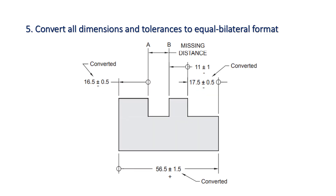Convert all dimensions and tolerances to equal bilateral format. Here, the 17 is converted to 16.5 ± 0.5 as its equal bilateral equivalent. The 47 is converted to 56.5 ± 0.5 equal bilateral equivalent, and the 57 is converted to 56.5 ± 1.5 equal bilateral.